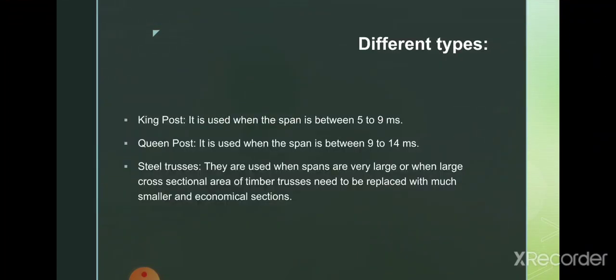There are different types of roof trusses: number one is king post, number two is queen post, and number three is steel roof trusses. Number one and two are wooden roof trusses, and number three, as the name suggests, is made out of steel, which is the most widely used truss nowadays.